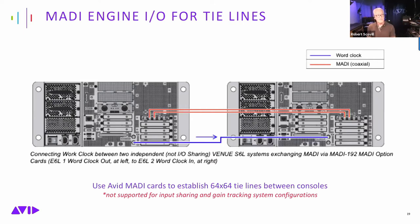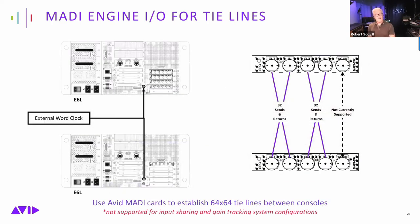If you need MADI tie lines between two standalone systems, use distributed word clock — an external word clock device sending to both engines. Once both engines share the same clock, MADI send and returns work reliably. Note: the word clock output port on the MADI 192 option card is not supported in any version of S6L software — do not use it as a word clock source.